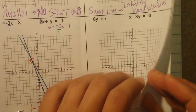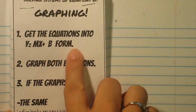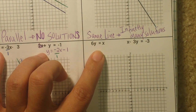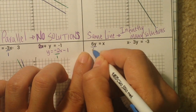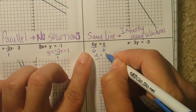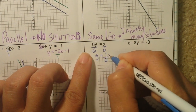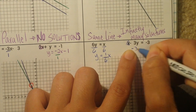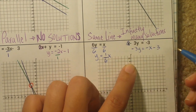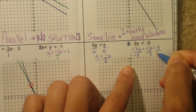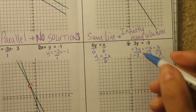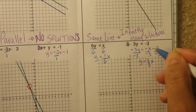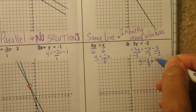Let's do one more. First, get into y equals mx plus b form. For the first equation, divide everything by 6 to get y equals 1 over 6x. For the second, take the x to the other side so it becomes negative x, then divide everything by negative 3. You get y equals positive 1 third x plus 1.